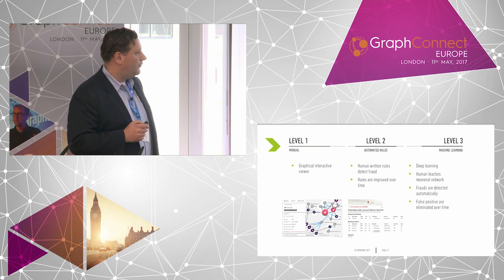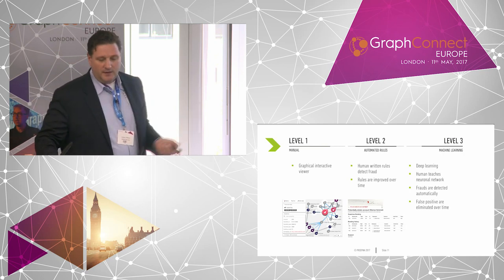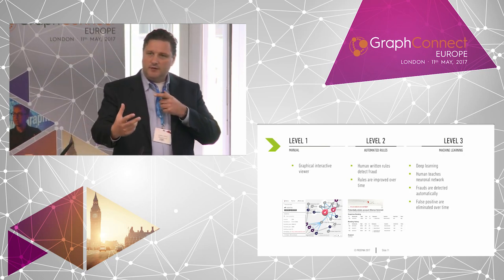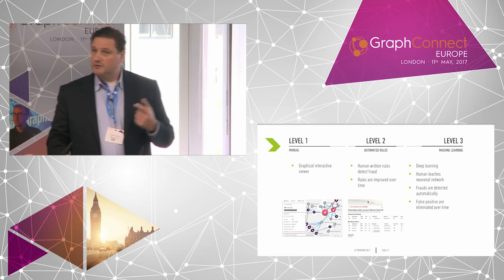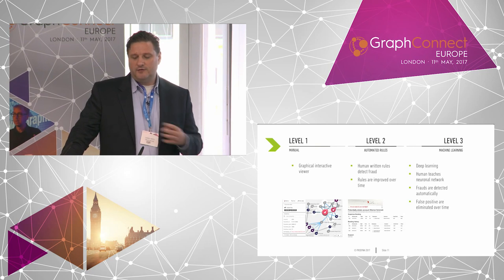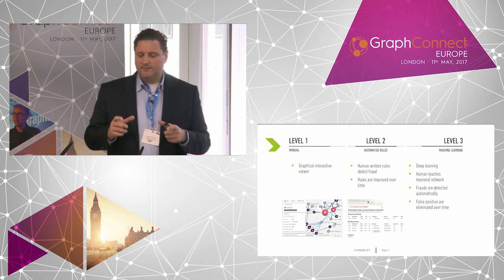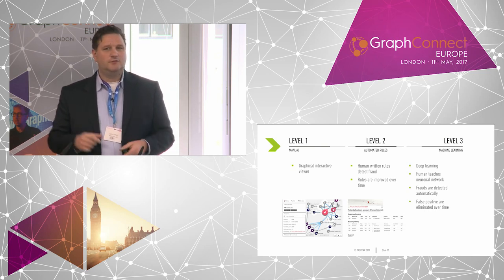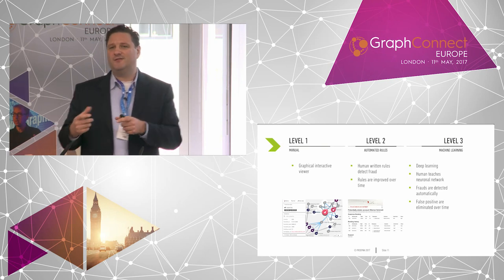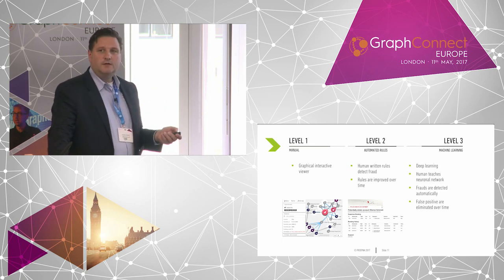Now we have three levels of how we can handle this. Number one: we have all our facts in our graph database and we use a tool — here's a screenshot, this is Linkurious — which allows me to take a deep look into my facts. There is trained personnel; some insurance companies use this approach mostly. They have tools like Linkurious and they try to detect suspicious things, like two people having always the same kind of accident — two car drivers who two years ago had the same accident. Maybe this is fraud.